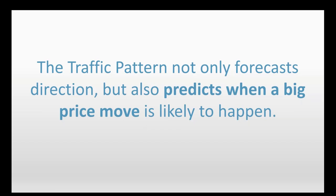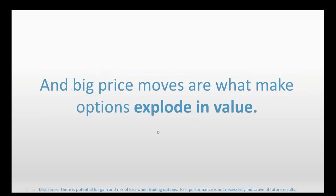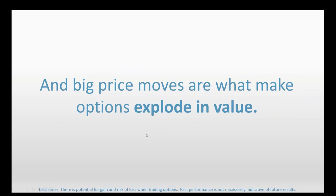Most chart patterns we follow are directional. A head and shoulders pattern forecasts a stock going down; a rising triangle forecasts a continuation upward. But these patterns don't necessarily forecast a really big move — just a direction. So most technical patterns, candlesticks, and everything else are telling us a likely direction, but they're not necessarily forecasting a really big move in that direction. Big price moves are what make options really jump or explode in value.